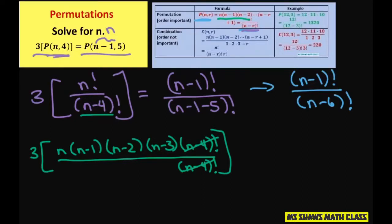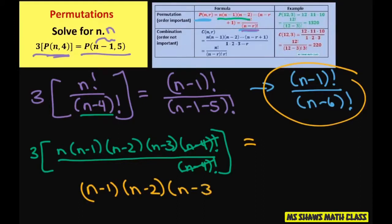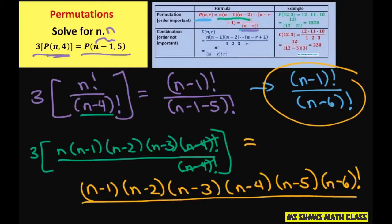Now this one here, we're going to write this as n minus 1 times n minus 2 times n minus 3 times n minus 4 times n minus 5 times n minus 6 factorial divided by n minus 6 factorial. So these cancel out.